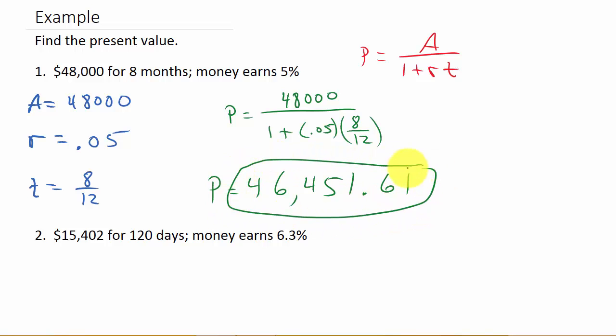And that gives you the present value, P, is $46,451.61. We'll round it to two decimal places. Alright, so let's look at another one.